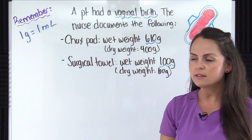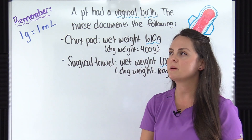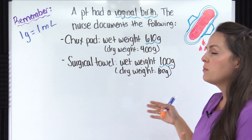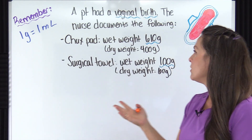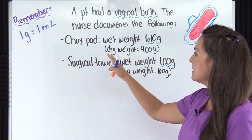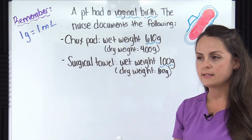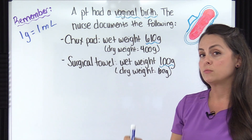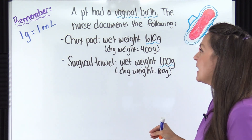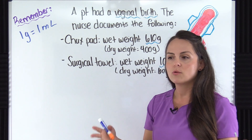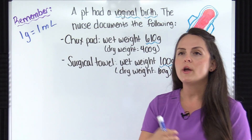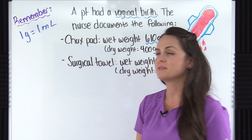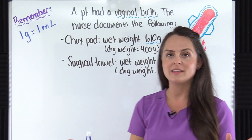Whenever you're solving these problems, there are some things to remember. How do we calculate this? One of the ways we can do this blood loss estimation is we take the item, we know its dry weight, and then we weigh it when wet. We subtract the dry weight from the wet weight and you get that in grams. What you want to remember is that one gram equals one milliliter — sear that in your mind because it'll help everything make sense.